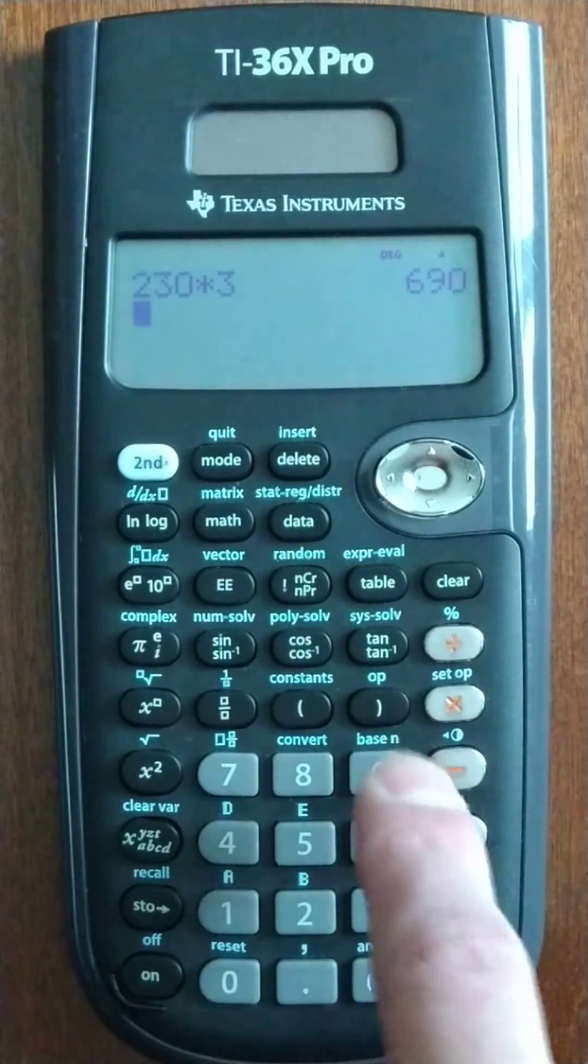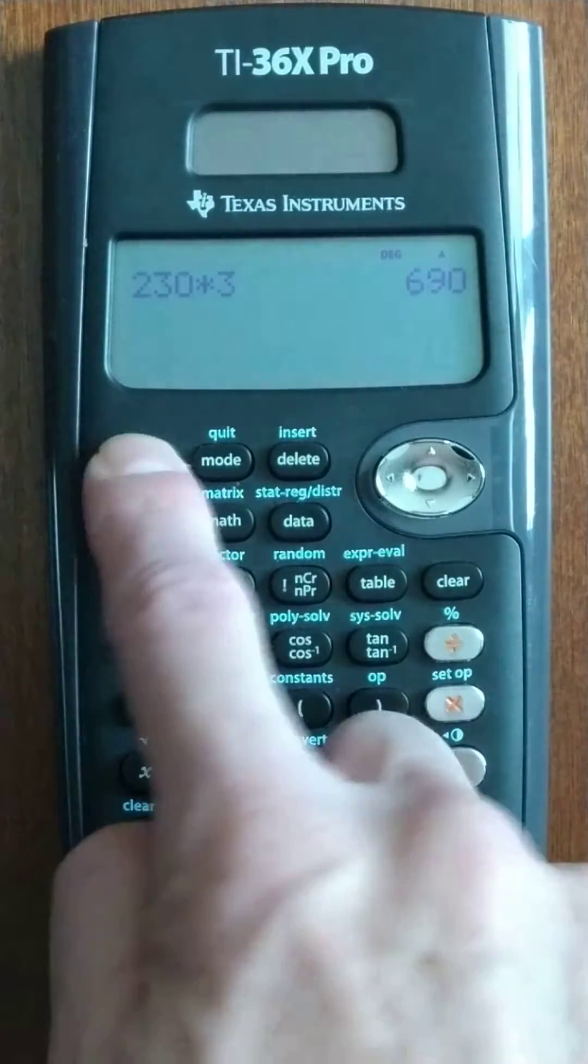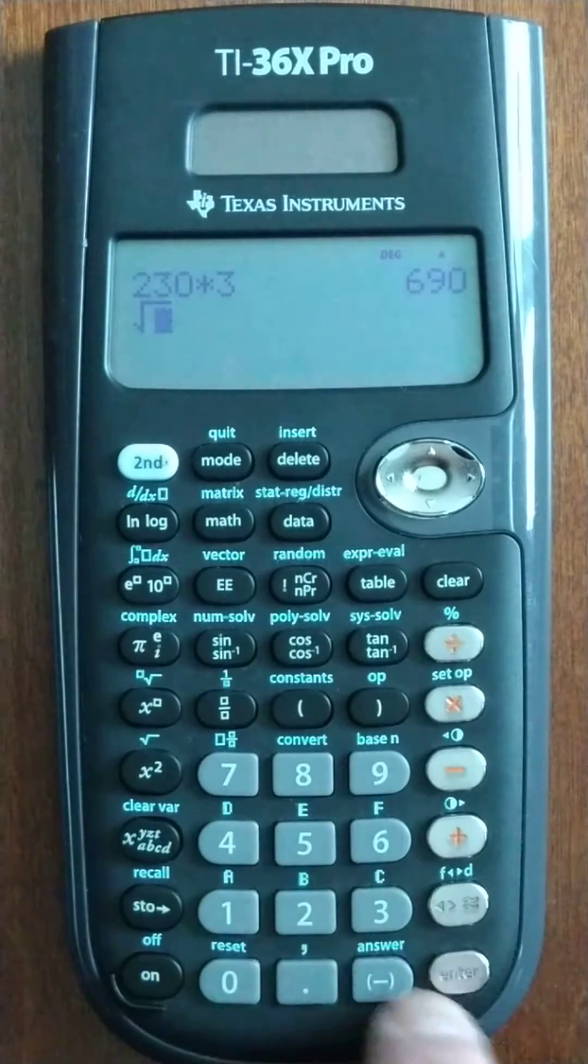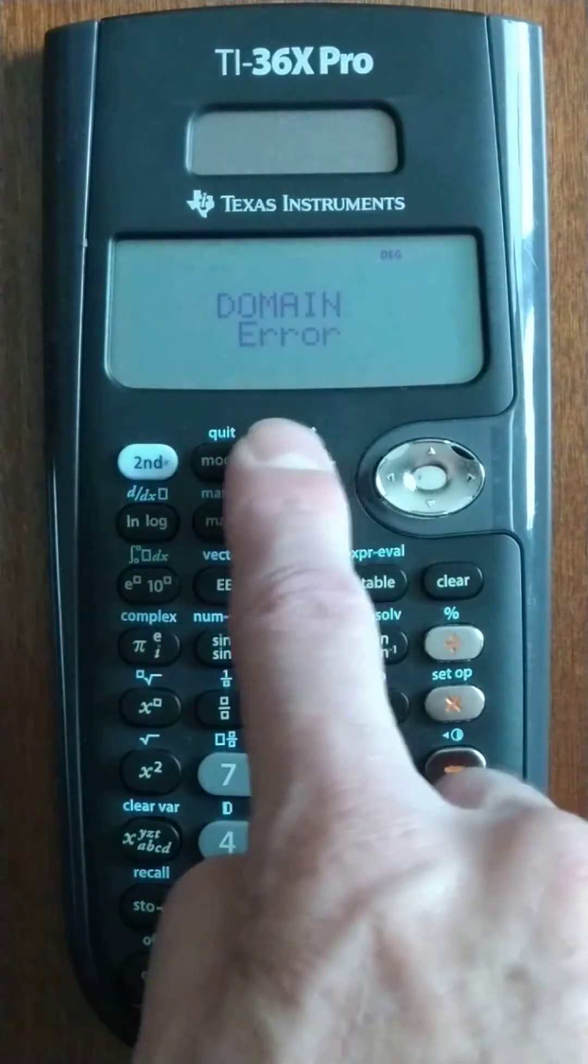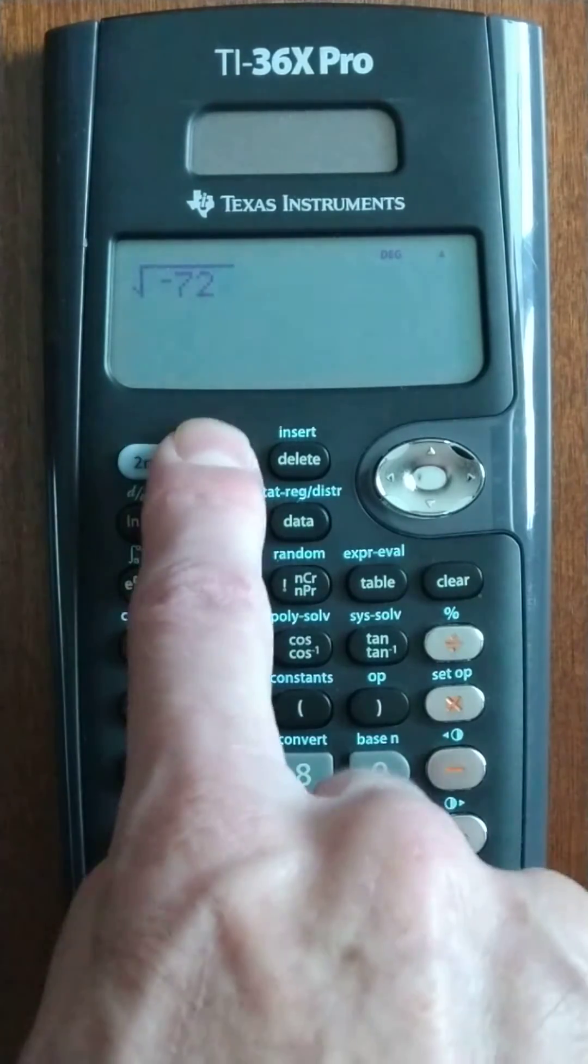All right, this guy. If you do square root of, you got to do shift, square root of negative 72, domain error. Same kind of thing, but we don't have to go to a different mode.